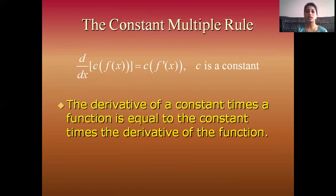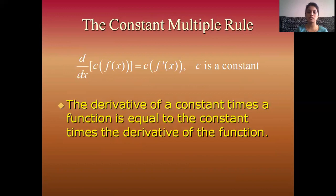Next rule: the constant multiple rule. When you apply the derivative with respect to x on c times f(x), where c is a constant and f(x) is any function, c comes outside and the derivative is applied on f(x). So d/dx of c·f(x) = c·f'(x). Notice: the derivative of a constant times a function is equal to the constant times the derivative of the function.